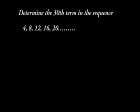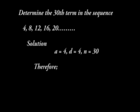For example, determine the 30th term in the sequence 4, 8, 12, and 16. A is 4, D is 4, N is 30. Therefore, applying the formula, the 30th term is 120.